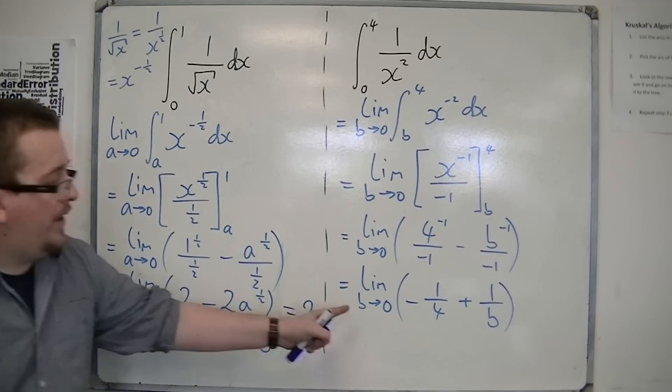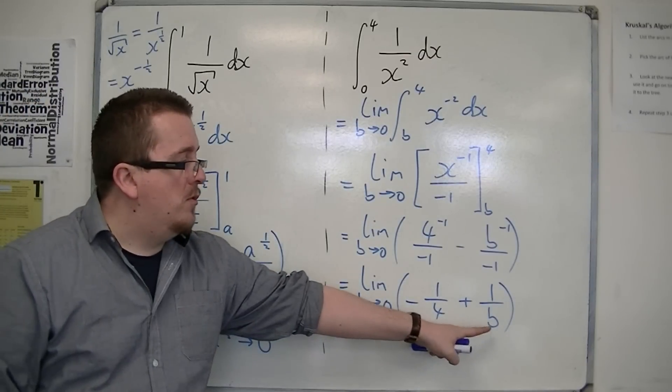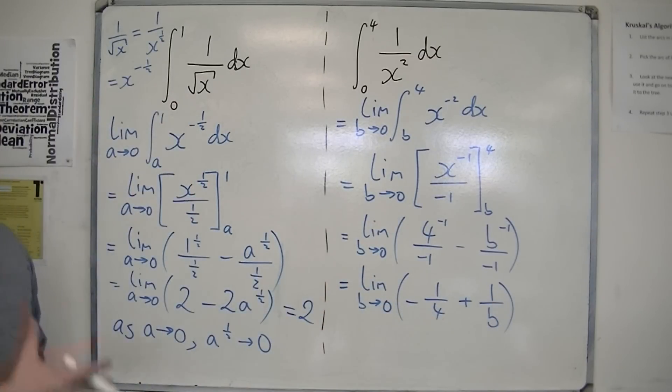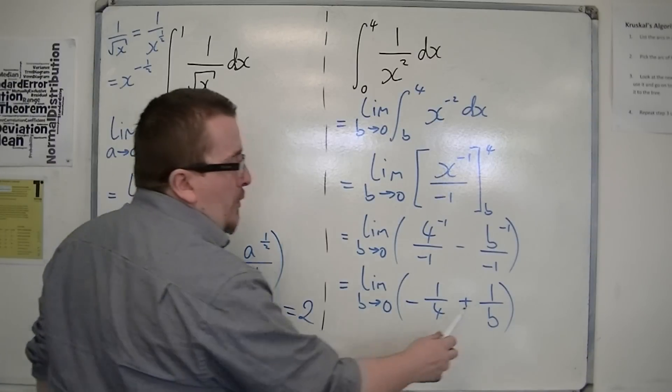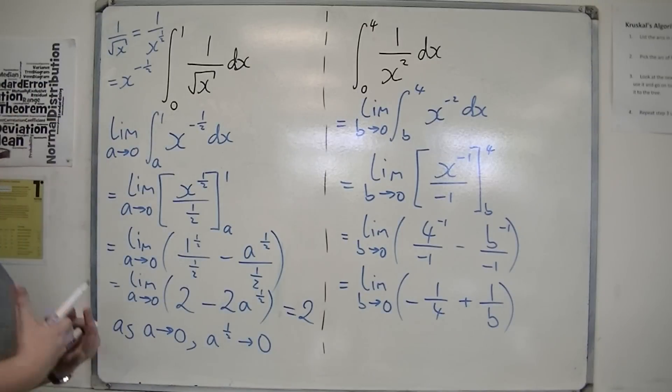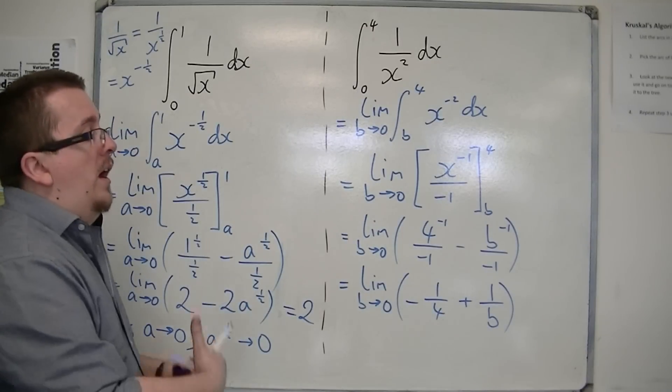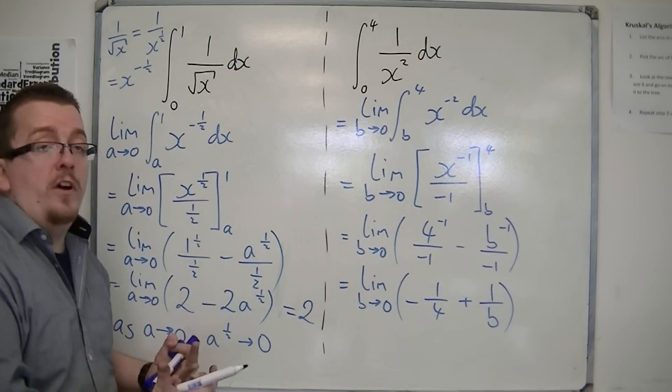Now, as b tends to 0, 1 over b will get larger and larger. Because you've got 1 over a half, for example, 1 over 2, 1 over 1, 1 over 0.5 is 2